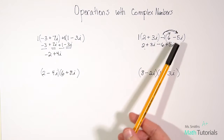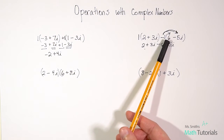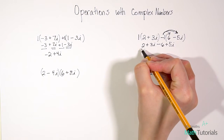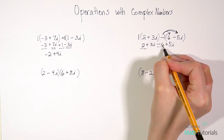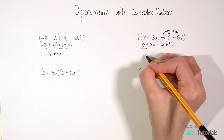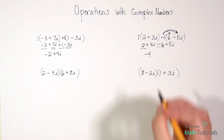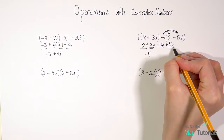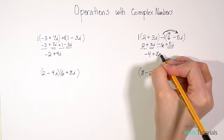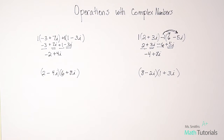Notice what happened — the signs just flipped. The positive became a negative and the negative became a positive. I like to walk through the distribution steps each time. Now let's combine like terms. We have positive 2 and negative 6, which are both constants: 2 minus 6 gives a negative 4. And then we have positive 3i and positive 5i: 3 plus 5 gives positive 8i. So our simplified answer is negative 4 plus 8i.